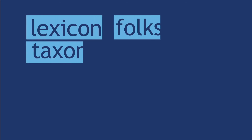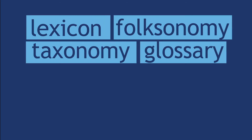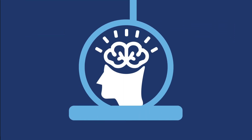To explain what an ontology is, we begin by discussing these related linguistic terms. They all differ by their level of complexity, but what do they all have in common? They all define a collection of terms that are associated with a set of related information, or a knowledge domain. Let's visit each one beginning with the least complex.